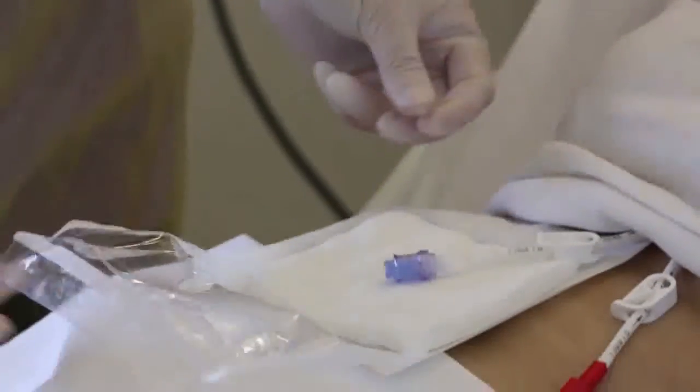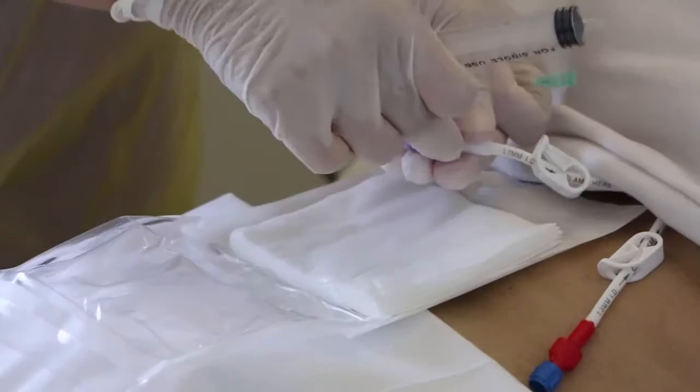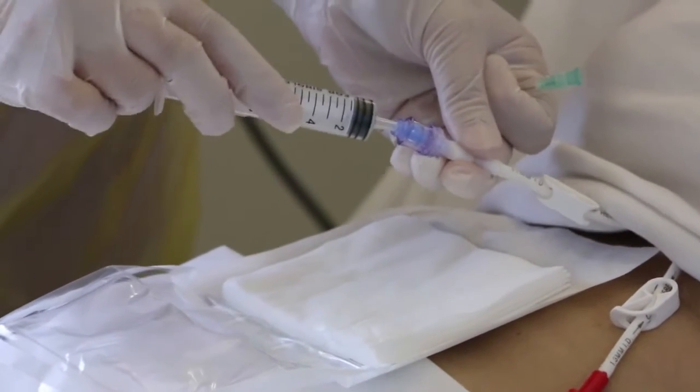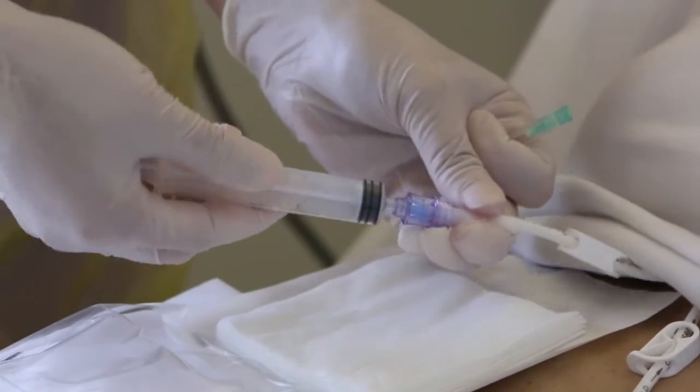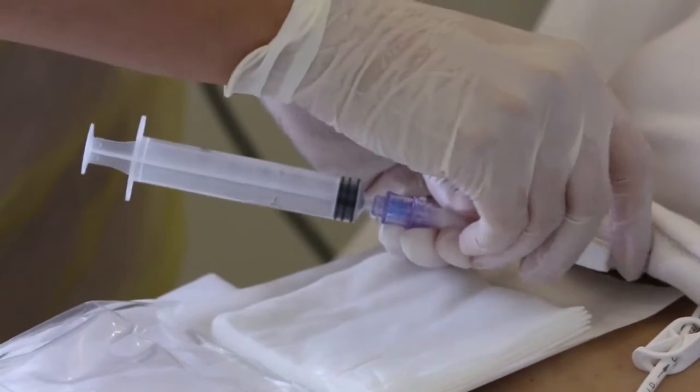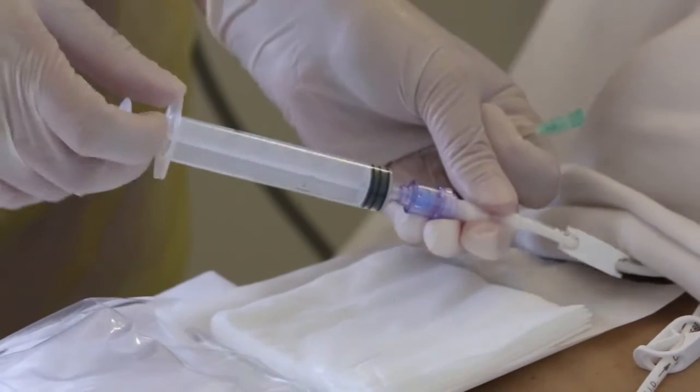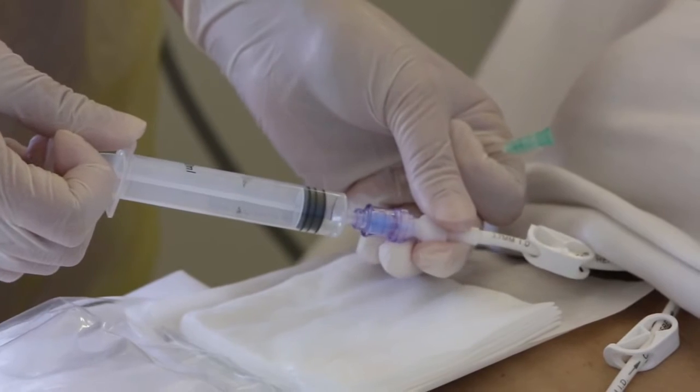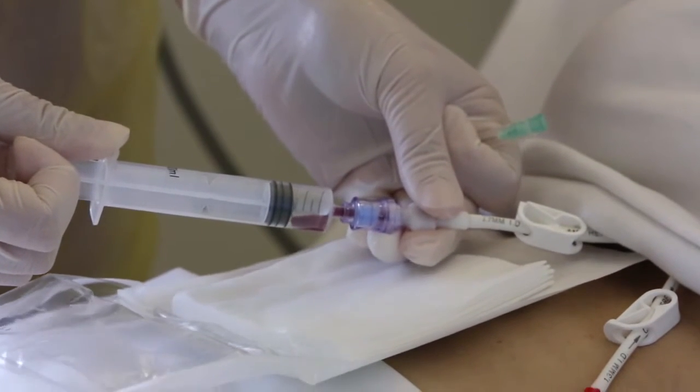Place the gauze swabs under the line port so that it is resting on a sterile area. Obtain the empty syringe from your tray, remove the needle and attach to the port as shown. Unclamp the line and aspirate a few ml of blood. Discard the blood-filled syringe and needle into the sharps box.